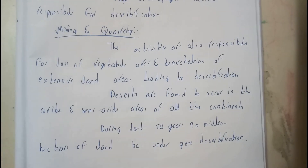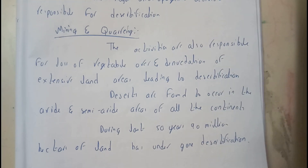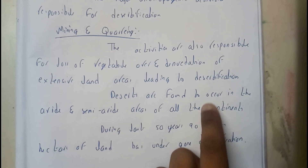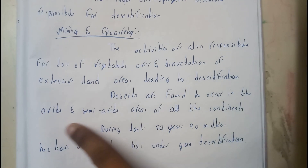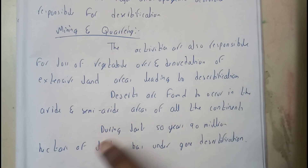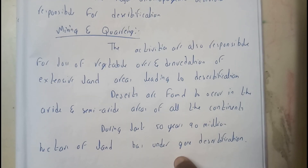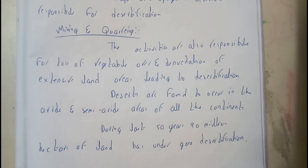Mining and quarrying have the same meaning — these activities are responsible for loss of vegetation over extensive land areas, leading to desertification. Deserts tend to form in the arid and semi-arid areas of all continents. During the last 50 years, 90 million hectares of land has undergone desertification. I hope everyone is clear with all the topics we have discussed. Thank you for watching.